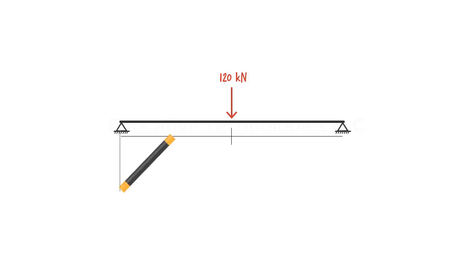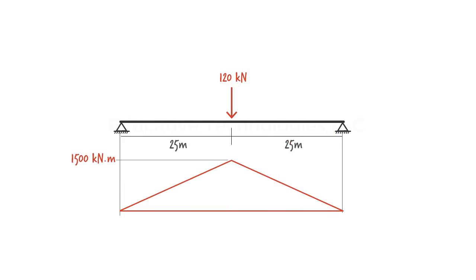For beams with a relatively long span, bending moment could become excessively large, requiring the use of even a deeper cross-section. In such a situation, it may be desirable to curve the beam, forming an arch.